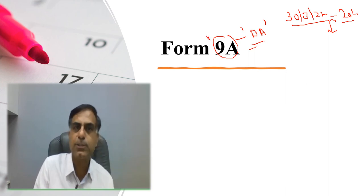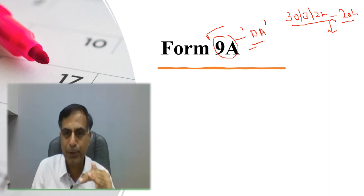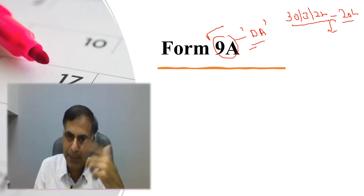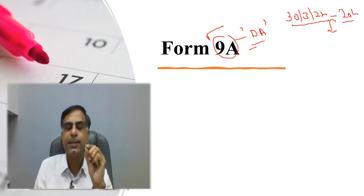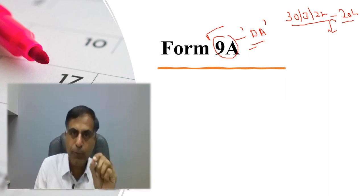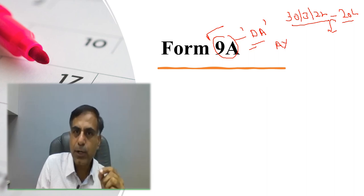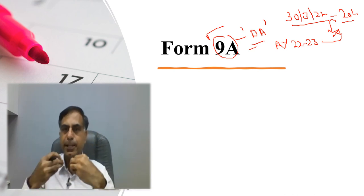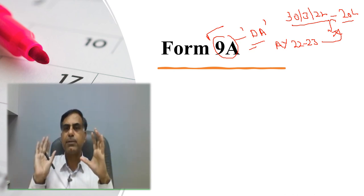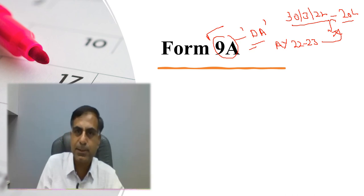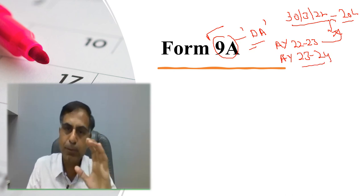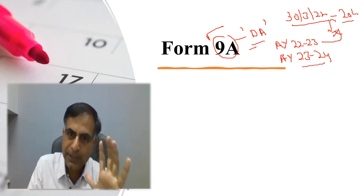So here, if the trust is able to fill up this form 9A, this is an example only of deemed application. If the trust fills up form 9A, then for the financial year 21-22 or assessment year 22-23, this 20 lakh rupees will be deemed to be applied for public charitable, public religious purposes. Assuming that in the next financial year 22-23, that is assessment year 23-24, this amount is duly applied for public charitable, public religious purposes by the trust.